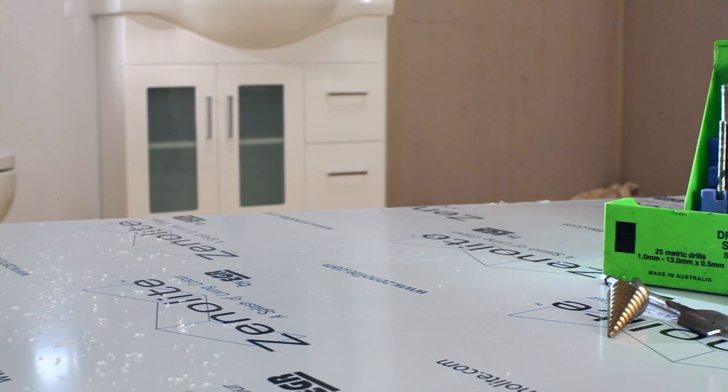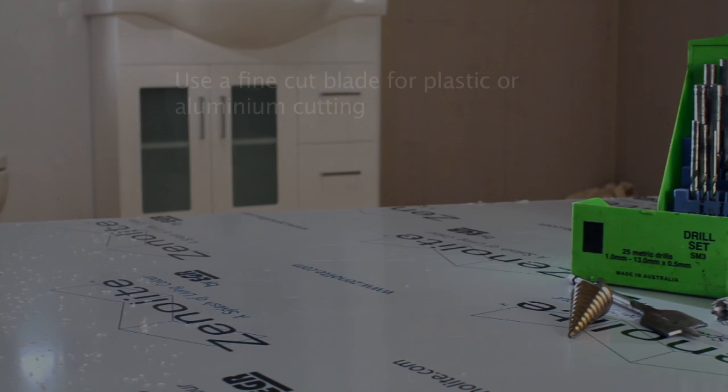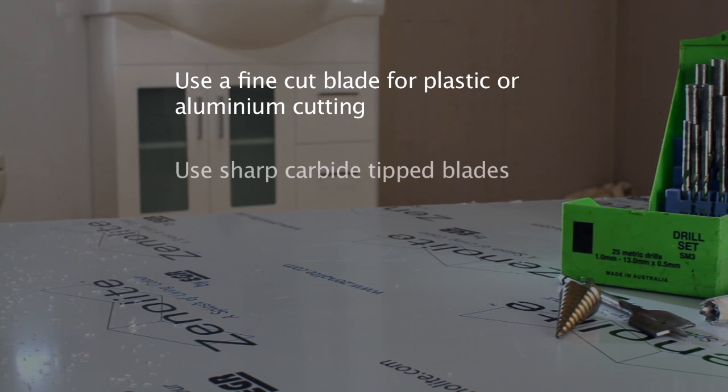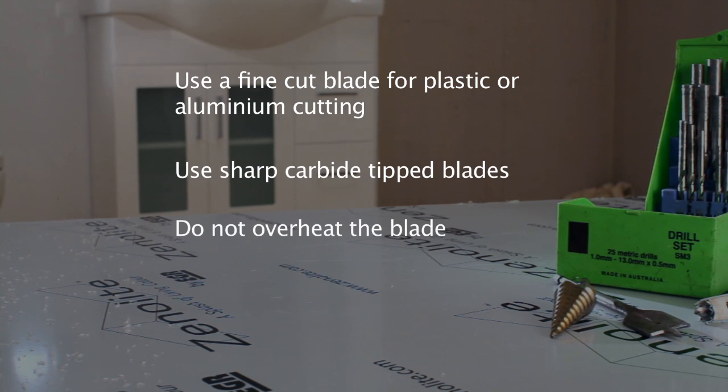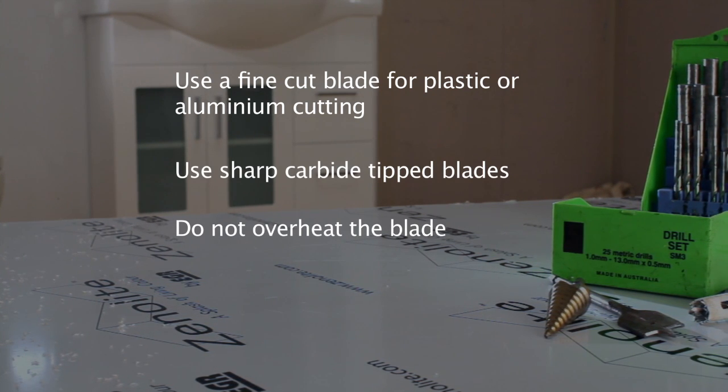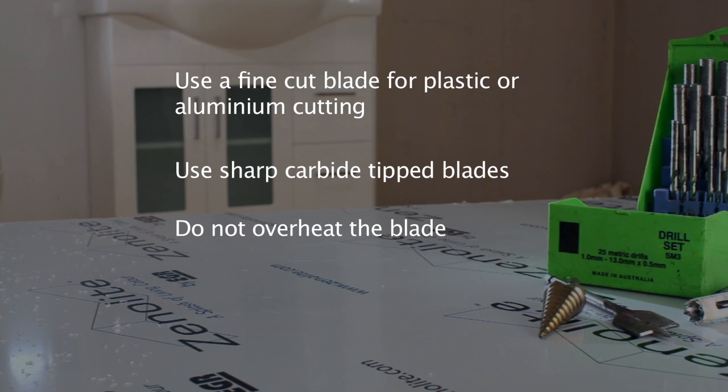Jigsaws are the most appropriate tool to cut short distances such as power point openings. Cut with the rear colour side of the Xenolite Plus sheet facing downwards. Only use blades that are suitable for cutting plastics or aluminium.